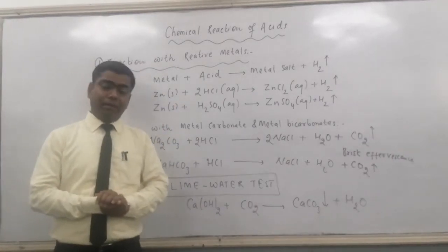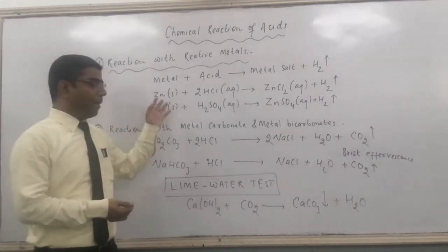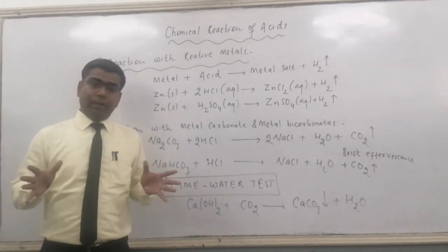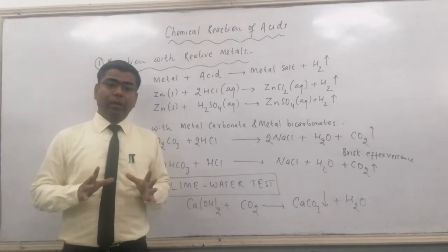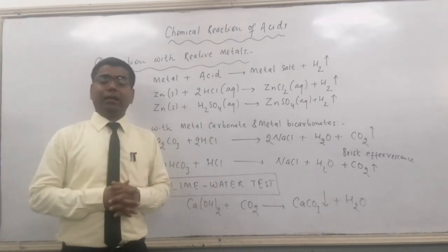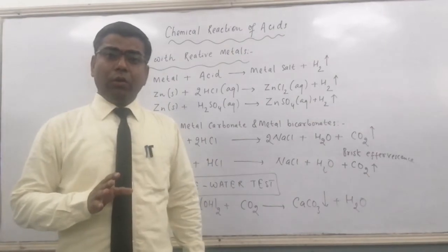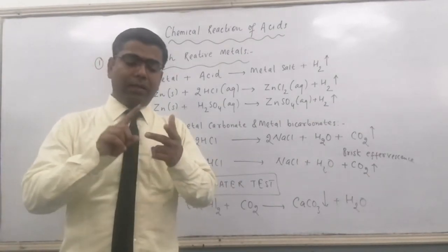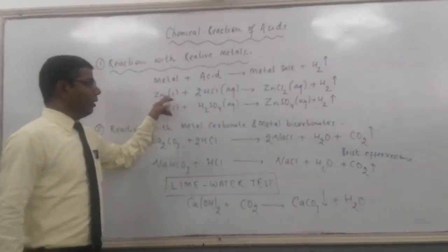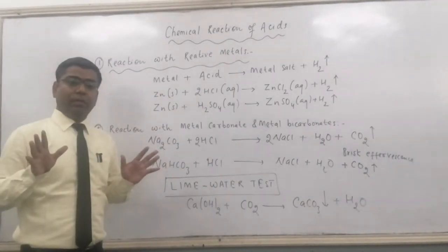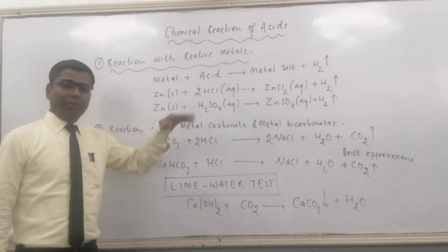Zinc can be replaced by iron, aluminium, or magnesium and so on. Remember, here we cannot use copper, silver, gold, or titanium, because these metals are least reactive. Their electropositive character or electron-losing tendency is less than hydrogen. So if we use gold with HCl, there will be no displacement reaction, because hydrogen is more reactive than gold — gold will not be able to displace hydrogen from the acid.